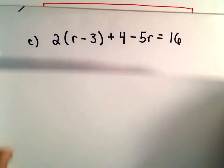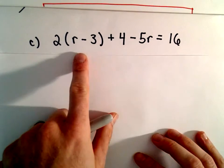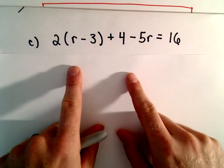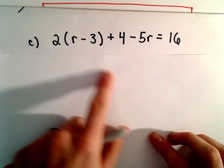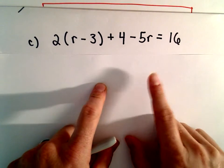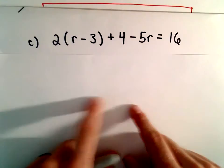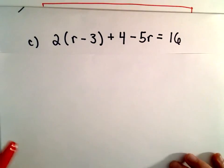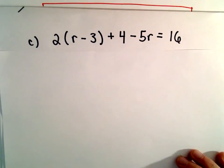So again, my goal is basically I want to get rid of the parentheses, combine all my like terms, get the term involving r on one side, a number on the other, and then divide by whatever the coefficient is. So that's kind of a rough outline quickly of what we're going to do.